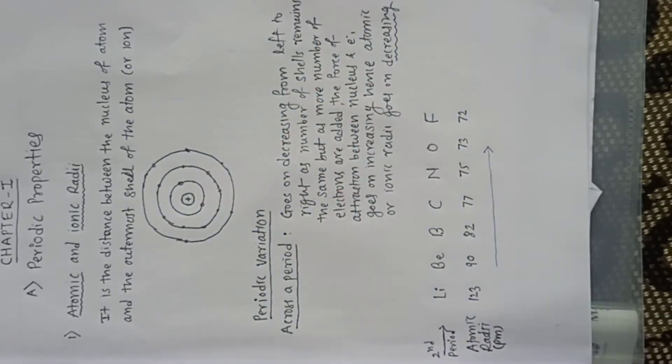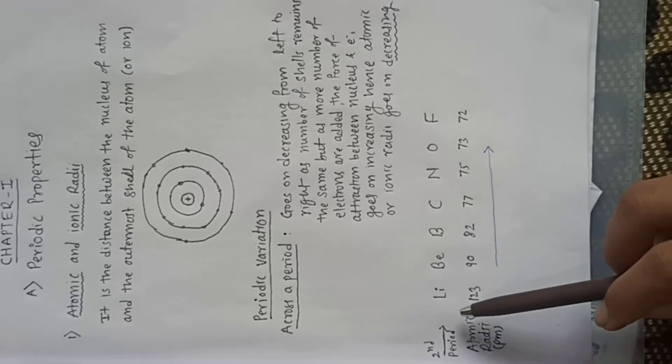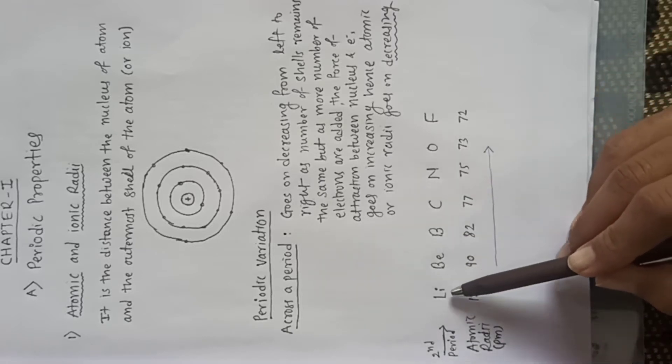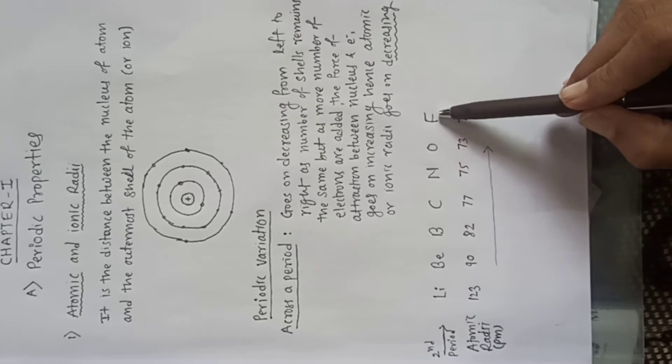Now we will see what happens to this atomic radius across a period and down the group - whether it will go on increasing or decreasing and why. Let's see what happens across a period.